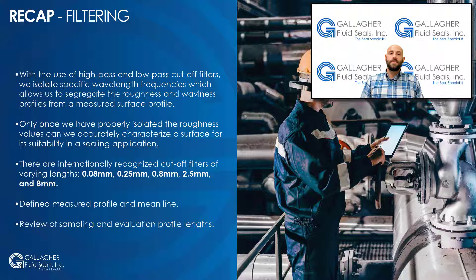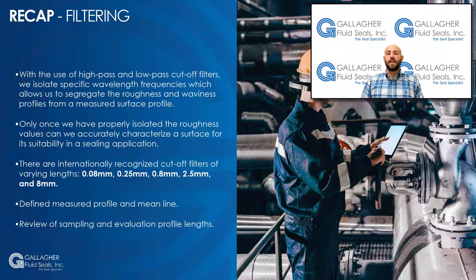To summarize, with the use of high-pass and low-pass cutoff filters, we isolate specific wavelength frequencies, which allows us to segregate the roughness and waviness profiles from a measured surface profile. Only once we have properly isolated the roughness values can we accurately characterize a surface for its suitability in a sealing application. There are internationally recognized cutoff filters of varying lengths: 0.08 mm, 0.25 mm, 0.8 mm, 2.5 mm, and 8 mm. We then defined the measured profile and mean line, as well as highlighted the filtering differences between the primary profile and roughness profile.